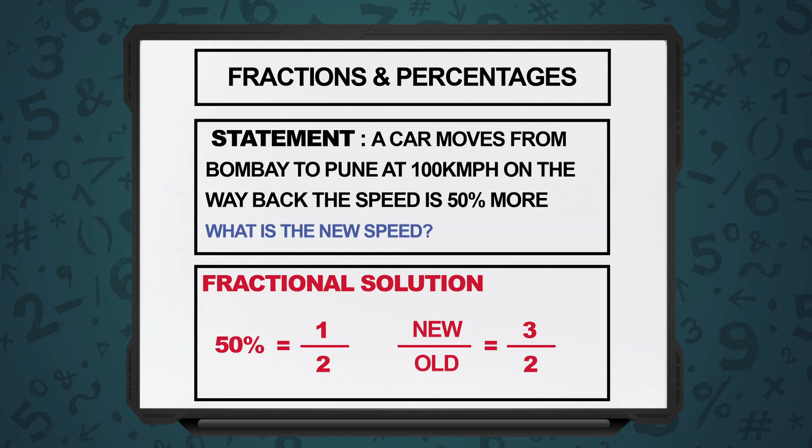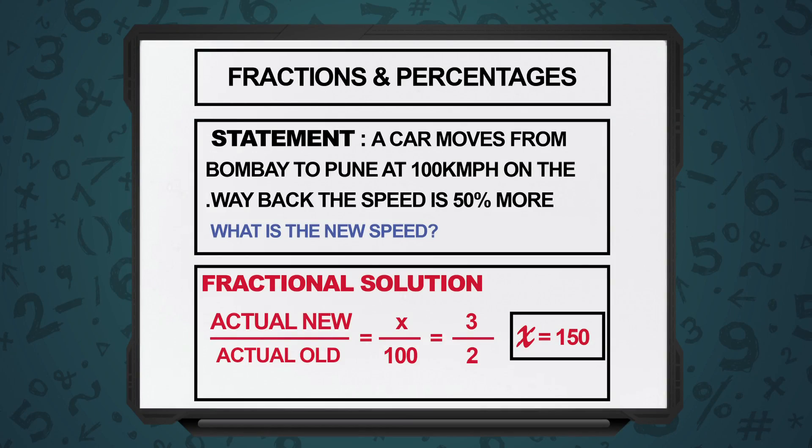So you can quickly do the ratio check — 5 upon 6, 6 upon 5, and so on and so forth. If I tell you a car is going from Bombay to Pune at a speed of 100 kilometers per hour, and on the return leg it oversped by 50% more, then it means on the return leg the speed was 150 kilometers per hour.